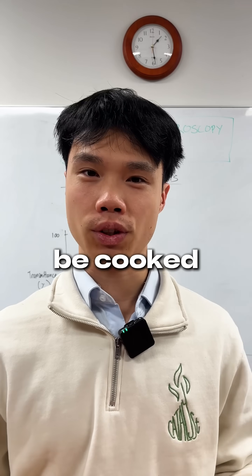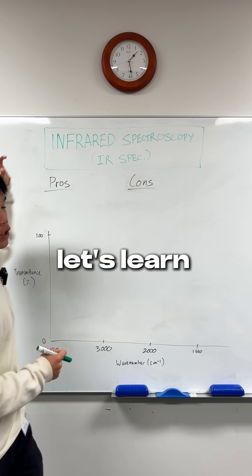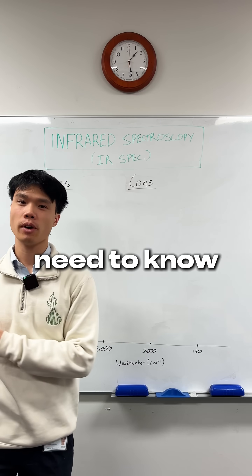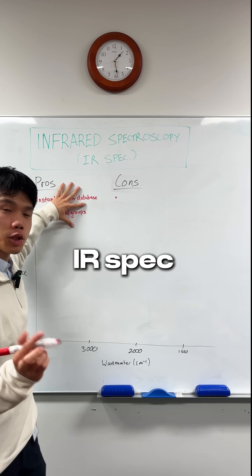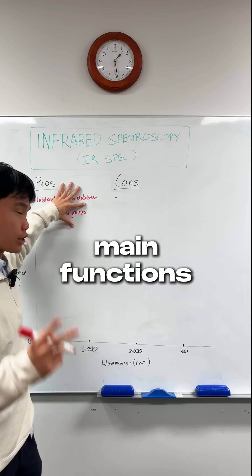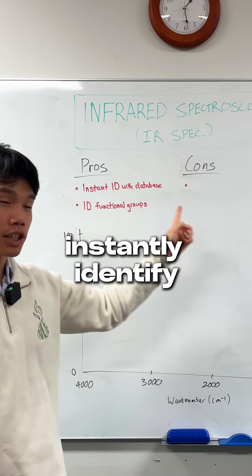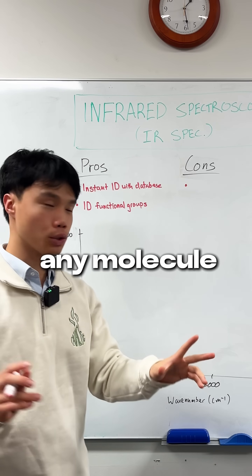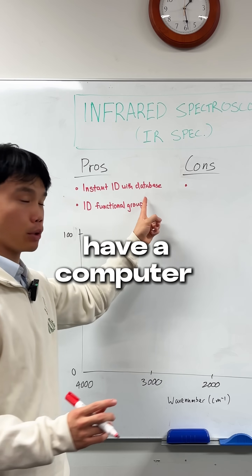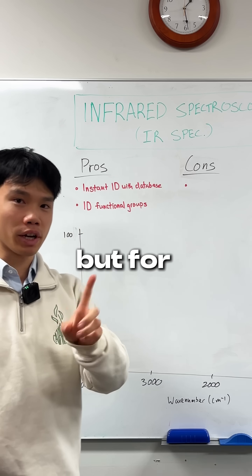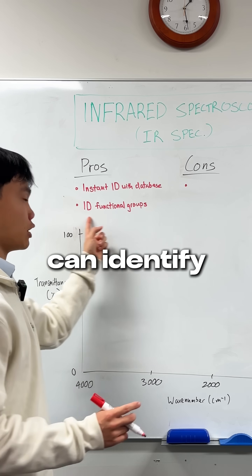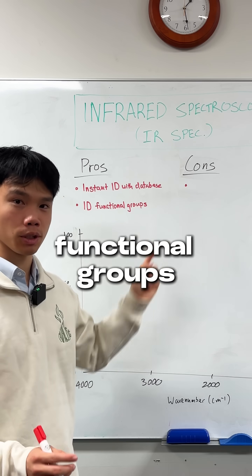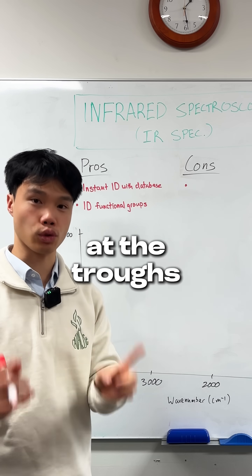Your chem trial is going to be cooked. Let's fix that. Let's learn everything you need to know about IR Spec in under 60 seconds. IR Spec has two main functions: it can instantly identify any molecule if you have a computer and database, but for HSC, it's more important that you can identify functional groups by looking at the troughs.